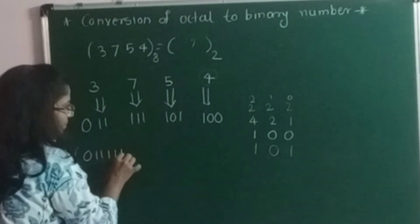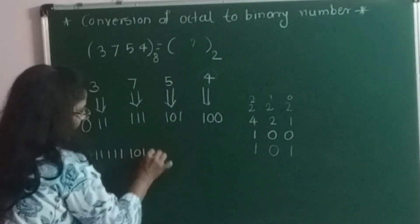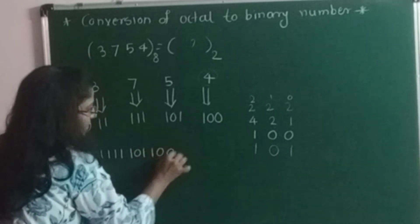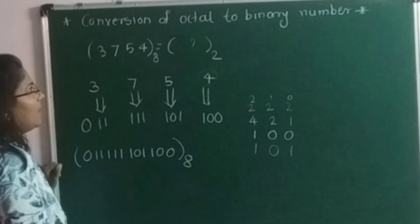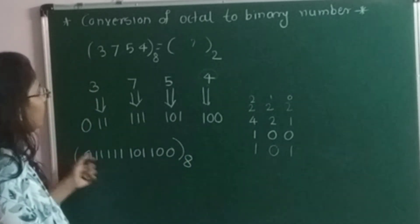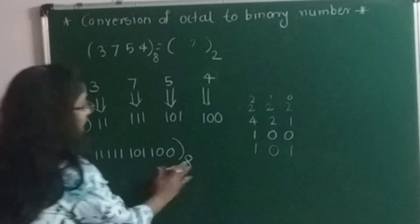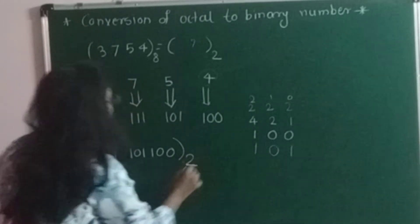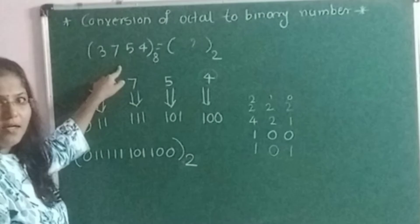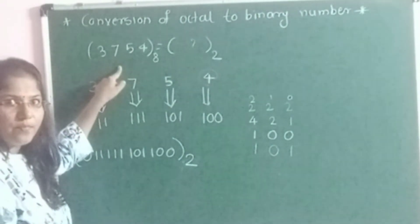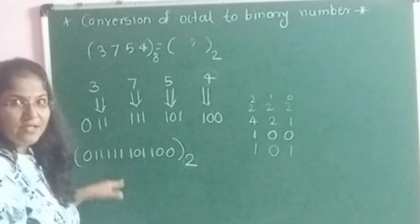Now writing the complete equivalent binary number: 0,1,1 for digit 3 — then 1,1,1 for digit 7 — then 1,0,1 for digit 5 — and finally 1,0,0 for digit 4. This is the equivalent binary number for the given octal number 3754. Isn't it too easy? Yes, it is too easy.